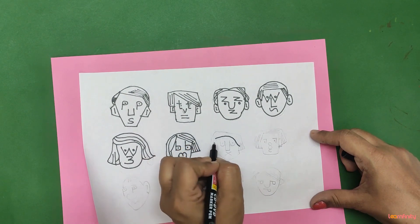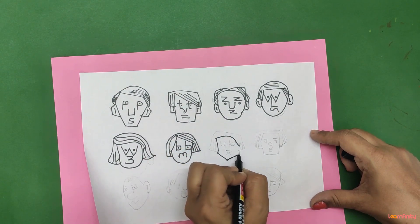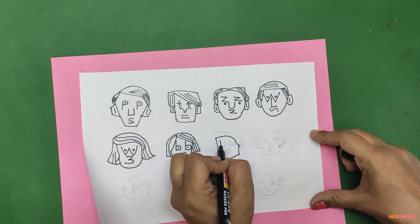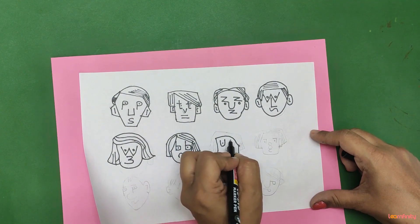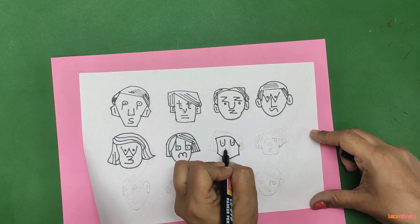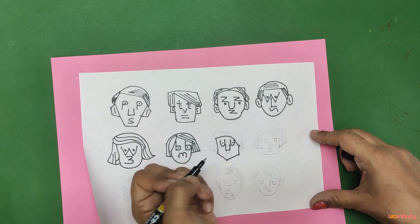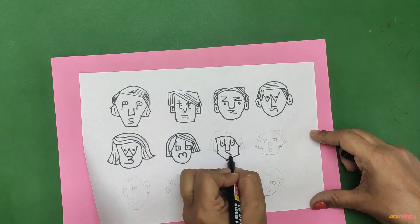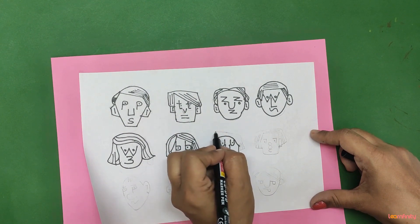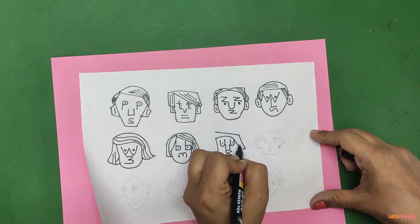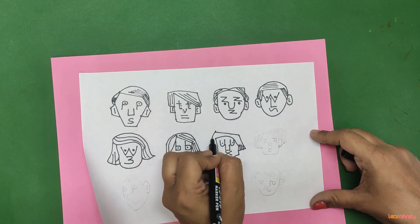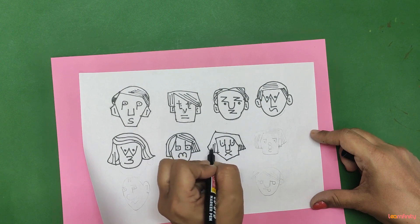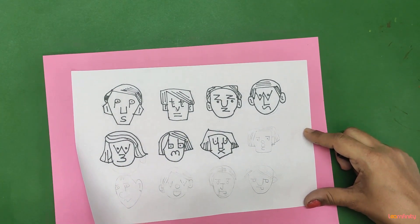Now here we are drawing U, one more time U, one capital U and X, capital X. Here we use both U, capital and small.